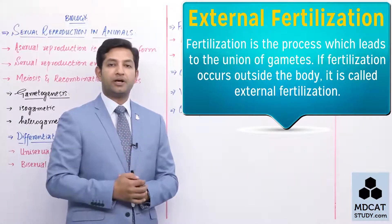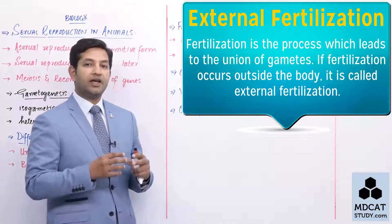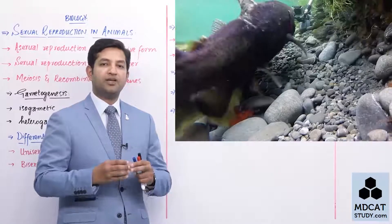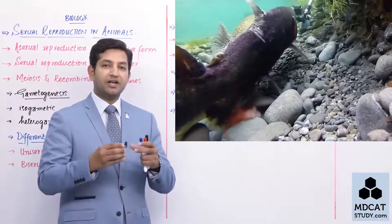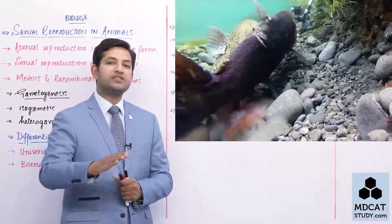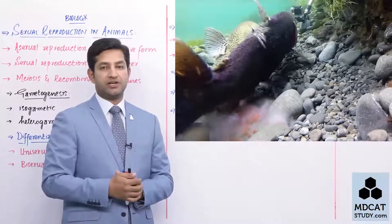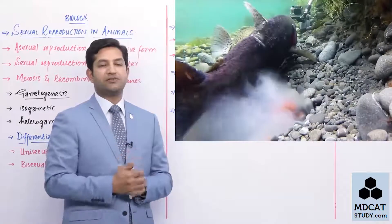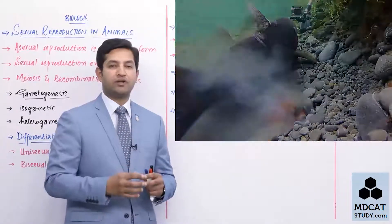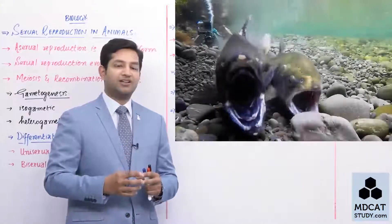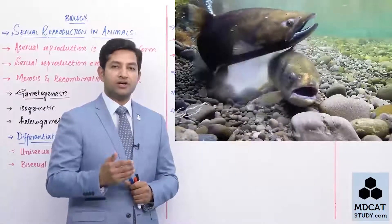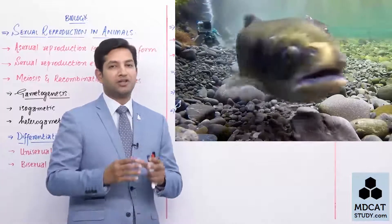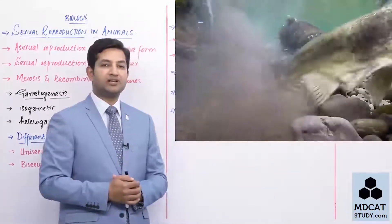An important point to understand here is that if gametes are going outside the body, they need a stable environment to survive and remain alive. That stable or nearly constant environment is available in aquatic surroundings. So organisms that live in water, or are dependent on water for reproduction, can be expected to undergo external fertilization.